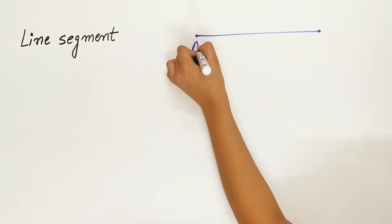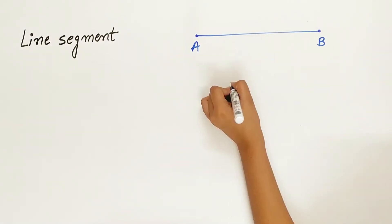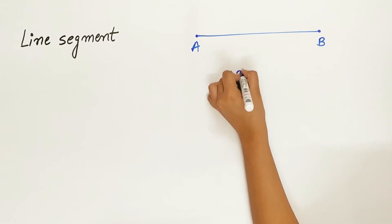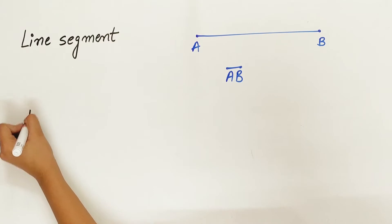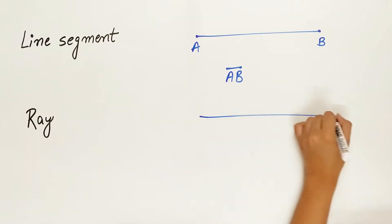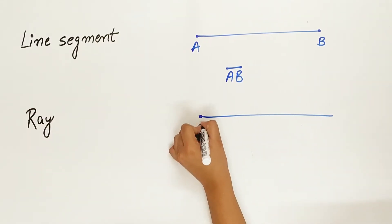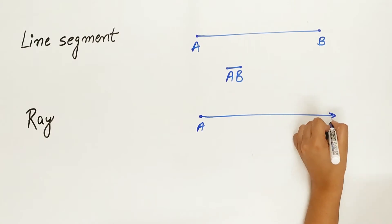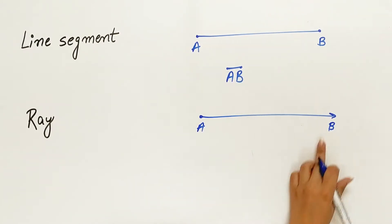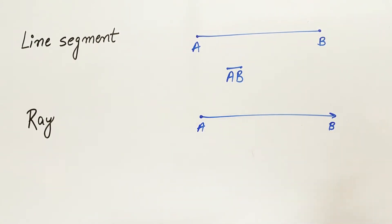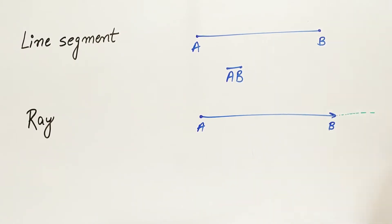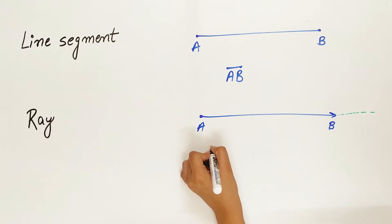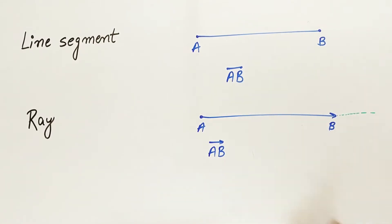A line segment has two endpoints, denoted by AB. Second is ray — it has one endpoint, meaning it can be extended from one end. It is denoted by this symbol. Third is line.